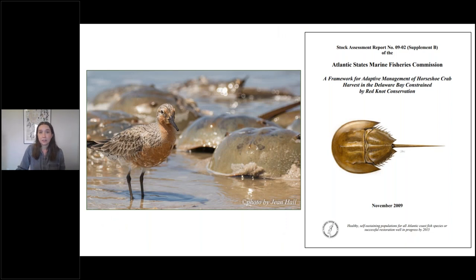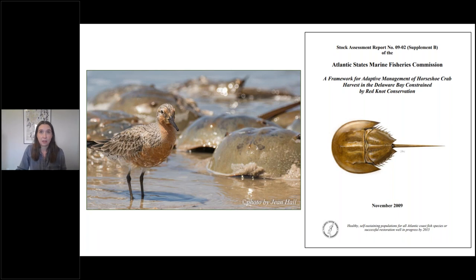Delaware Bay has received a lot of conservation attention because of unregulated harvest of horseshoe crabs in the late 90s, which was linked to a decline in shorebirds seen in the bay, particularly the red knot. Horseshoe crab harvest is currently managed under an adaptive harvest management plan that includes, as part of its objective, an objective to ensure the population stability of red knot — one of the only fisheries management plans in the U.S. that has the conservation of another non-fish species as part of its objective.